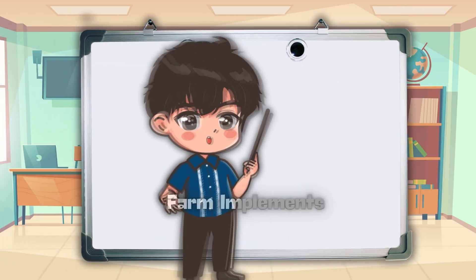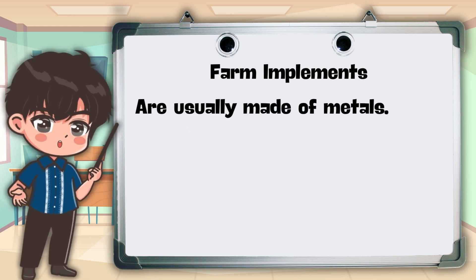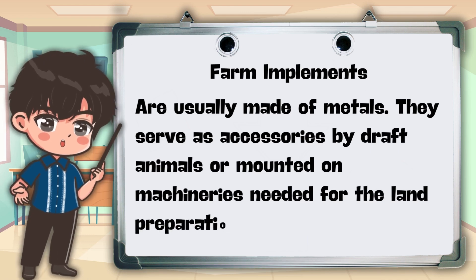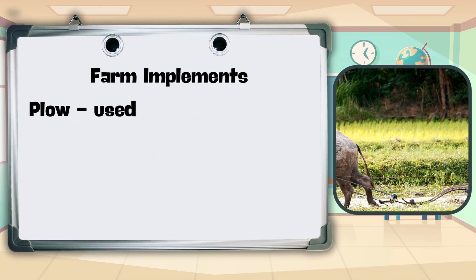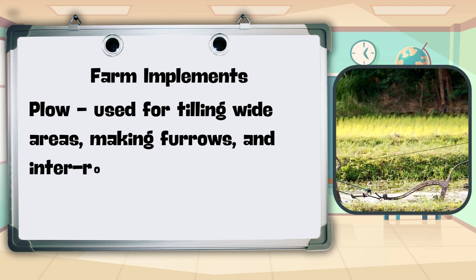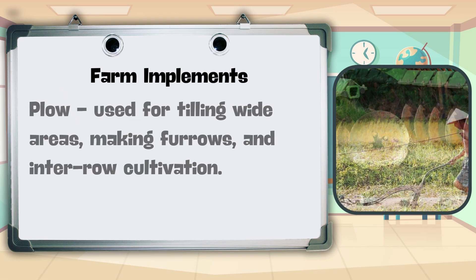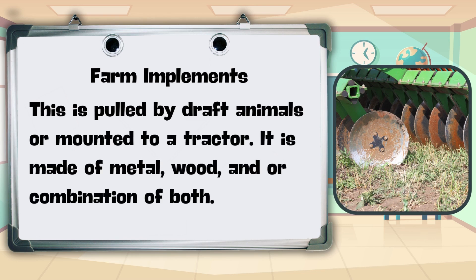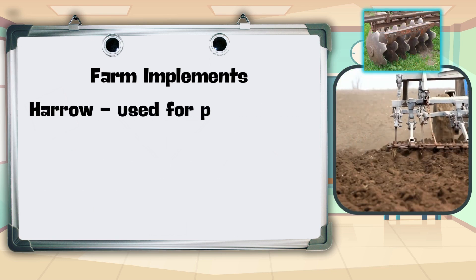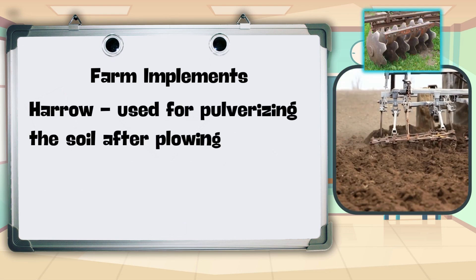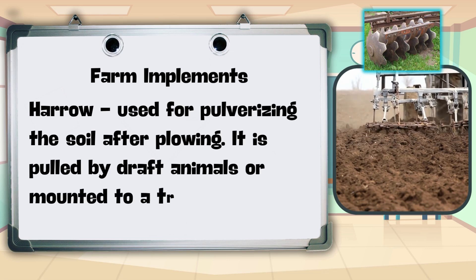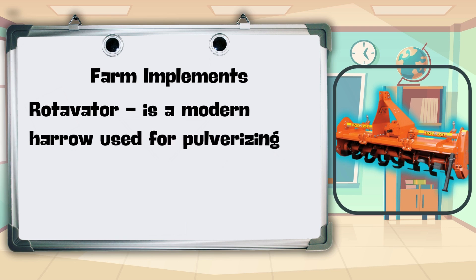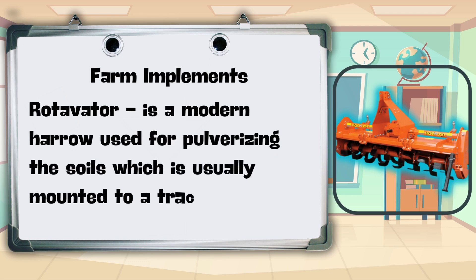Now let's go on to the farm implements. Farm implements are usually made of metals. They serve as accessories pulled by draft animals or mounted on machineries needed for land preparation. Plow — used for tilling wide areas, making furrows, and inter-row cultivation; it is pulled by draft animals or mounted to a tractor, made of metal, wood, or a combination of both. Harrow — used for pulverizing the soil after plowing; pulled by draft animals or mounted to a tractor. Rotavator — a modern harrow used for pulverizing the soil, usually mounted to a tractor.